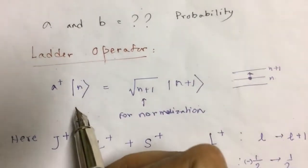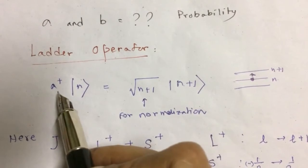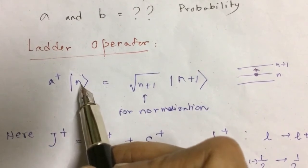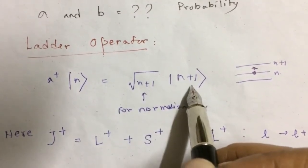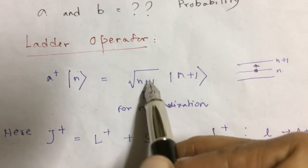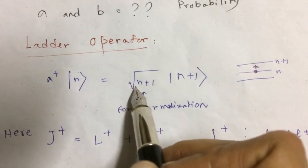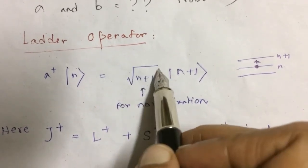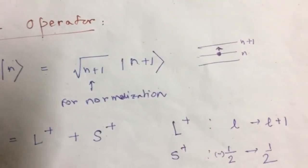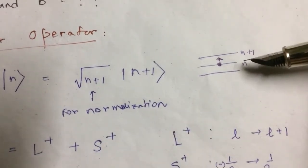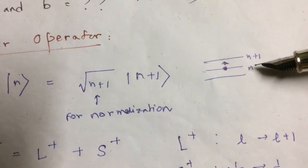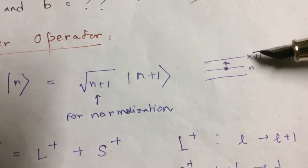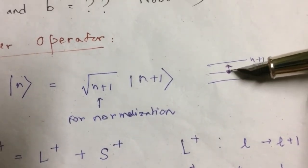We have learned in quantum mechanics about the ladder operator. The raising operator, denoted A+, acts on a spin state n and raises its value to n plus 1. For normalization we multiply by the square root of that n value. For example, if a raising operator acts on an energy level n, the state is raised to n plus 1.